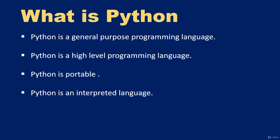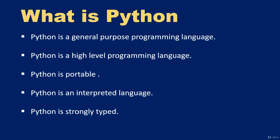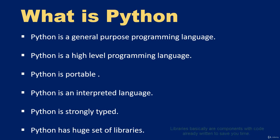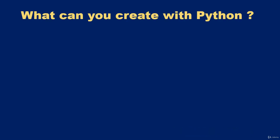Python is strongly typed — strongly typed languages don't convert data from one type to another automatically. Python also has a huge set of libraries. A Python library is a collection of programs you can incorporate into your own program without writing code for them.